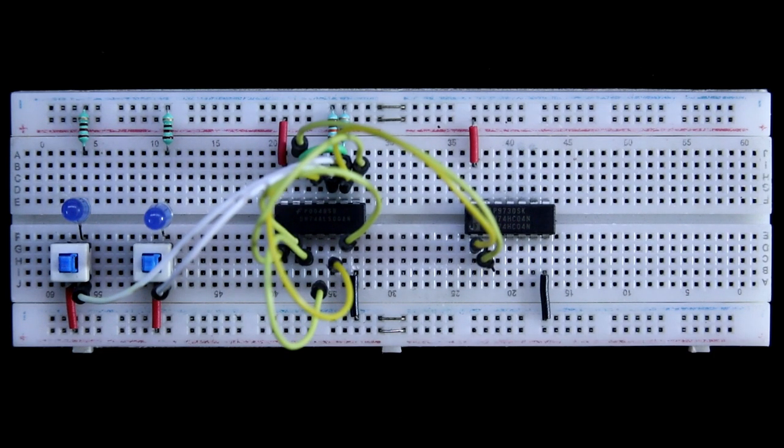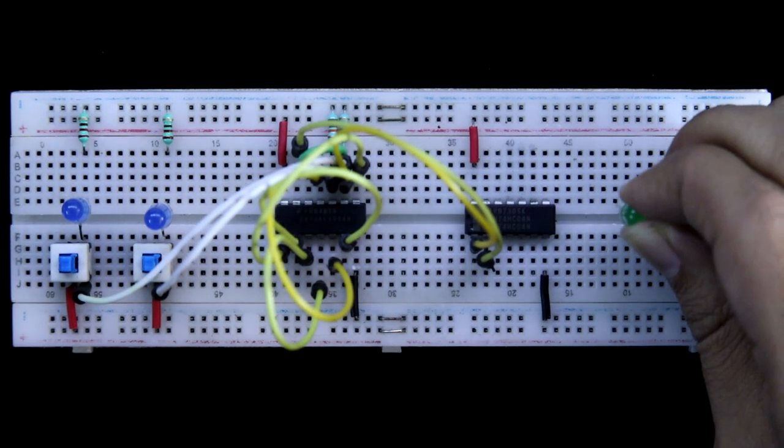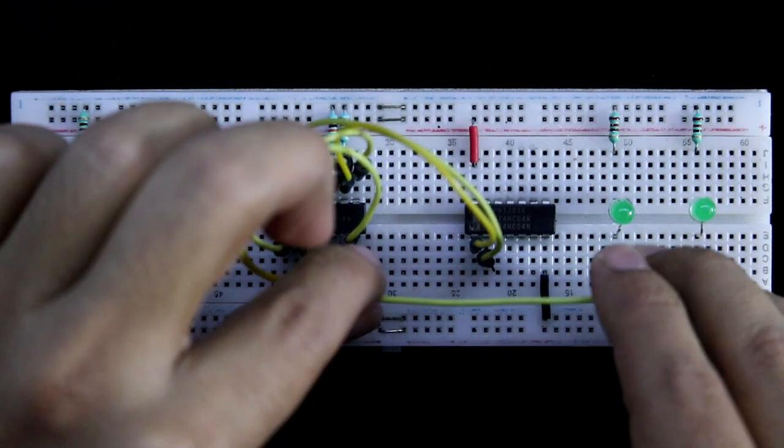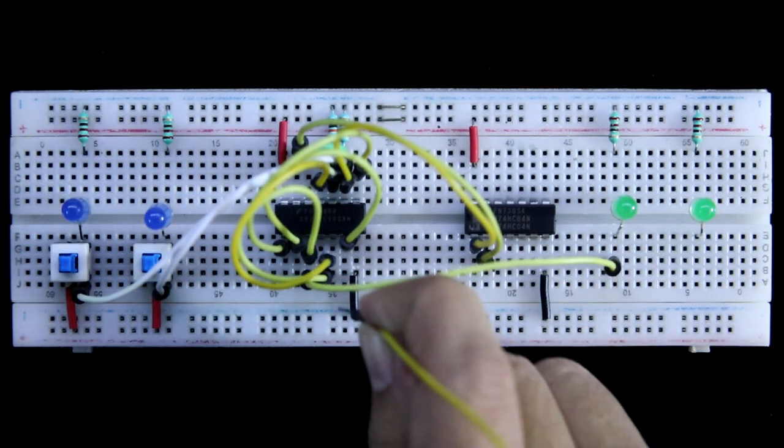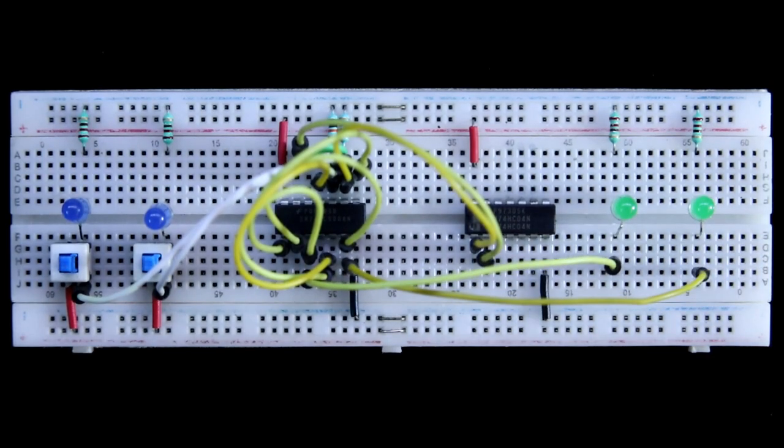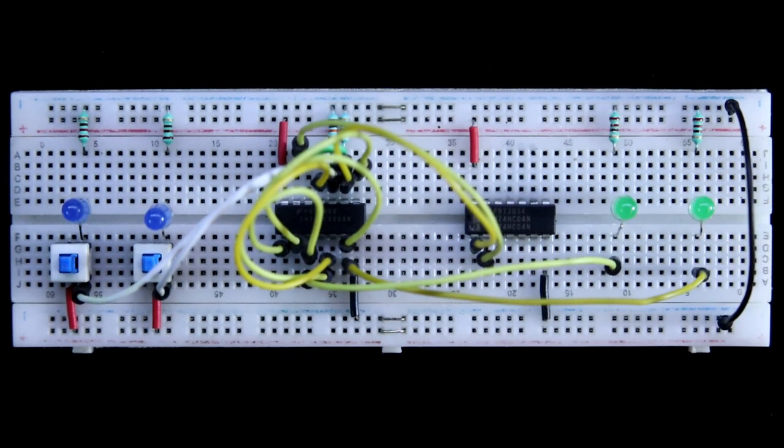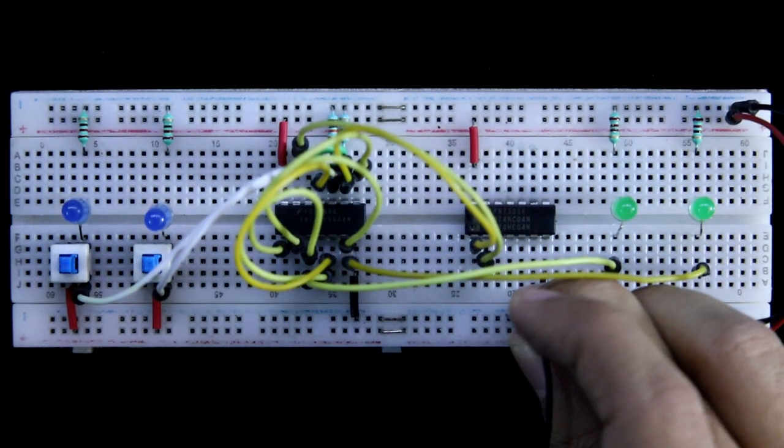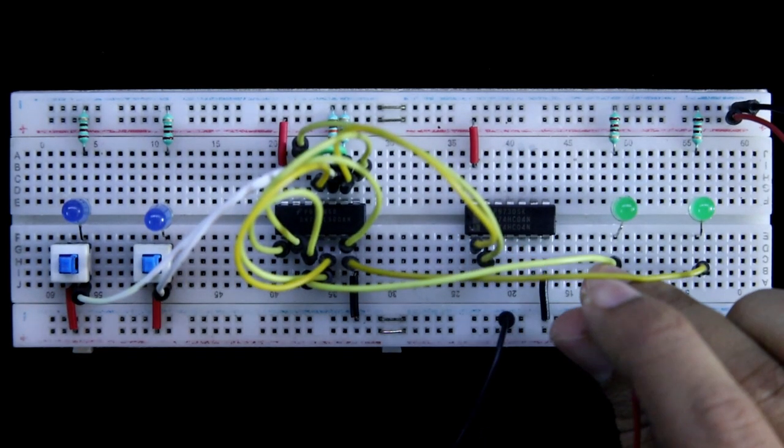Now we have to connect the output LEDs. This will be Q and Q bar. We will get the Q from pin 3 and from pin 6 we will get the Q bar. So these are connected. Now we have to connect both the positive and negative rails. Now I am connecting plus 5 volt. Here it is ground. Plus 5 volt.